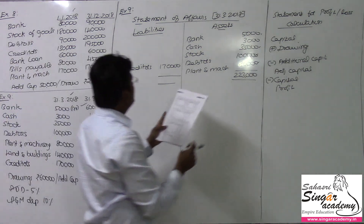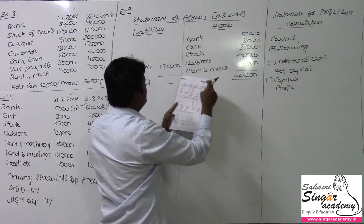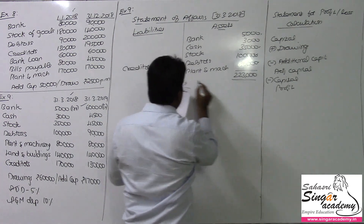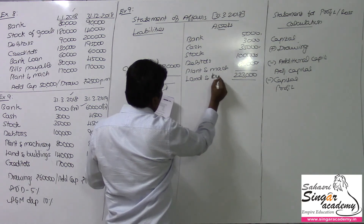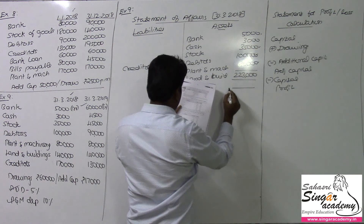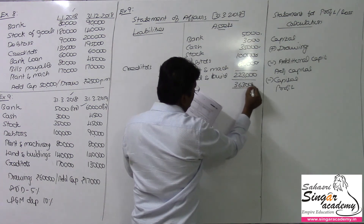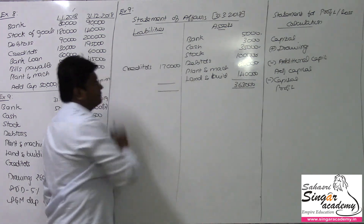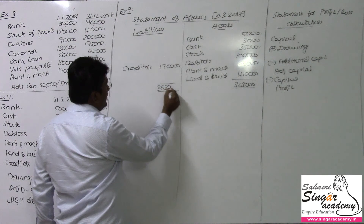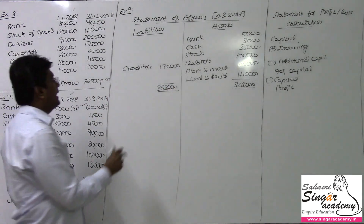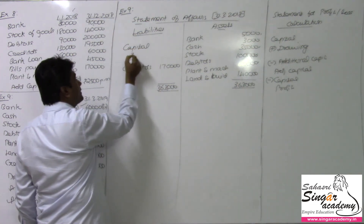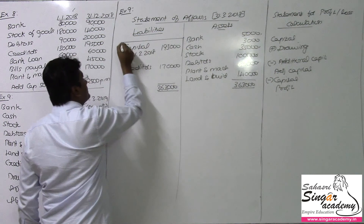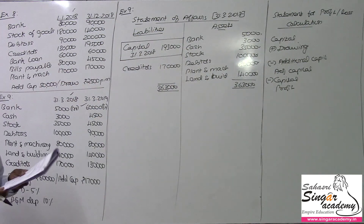So cash, bank, stock, debtors, plant and machinery — and of course land and building was also missed. Land and building value being 1,40,000. So total 3,63,000. Sorry, made a mistake — land and building would have a value of 1,40,000. We got the value here: total 3,63,000, and liabilities 1,70,000, so the balancing figure will be 1,93,000 — capital as on 31-3-2018. We got the balancing figure here.